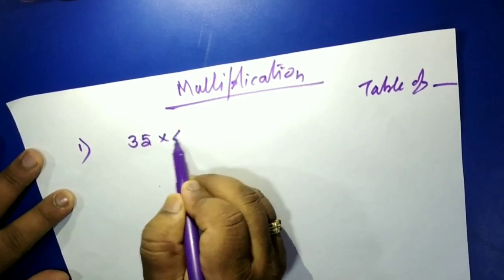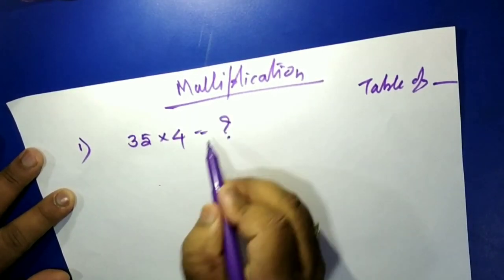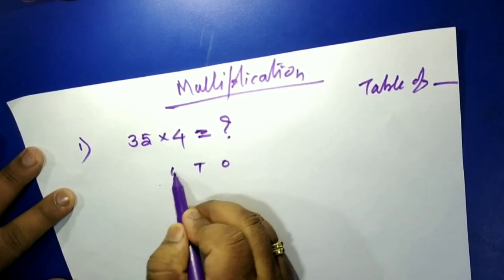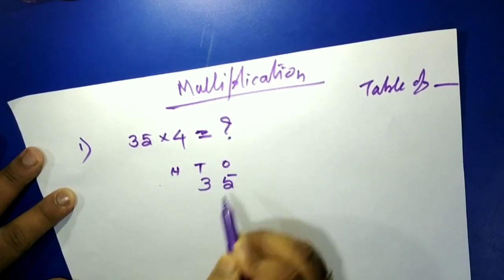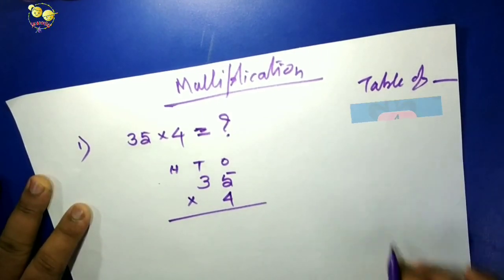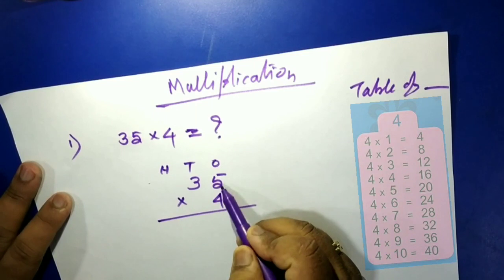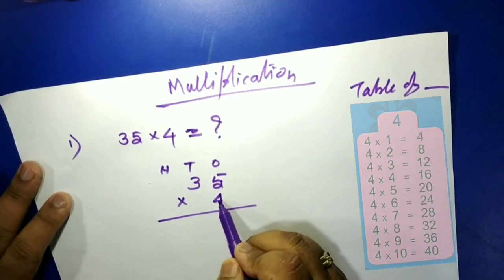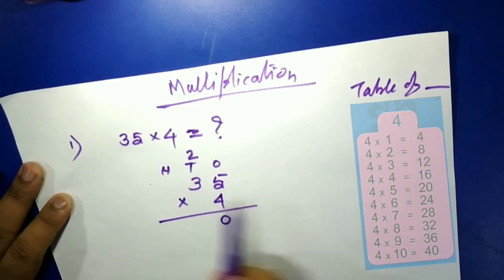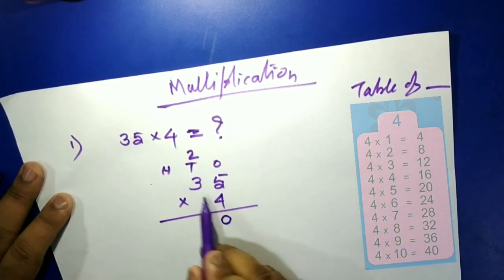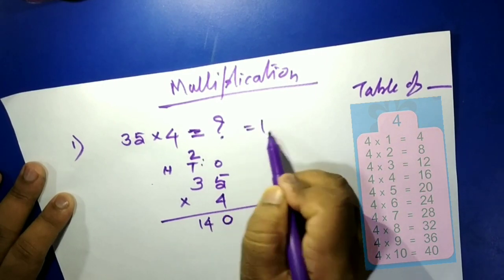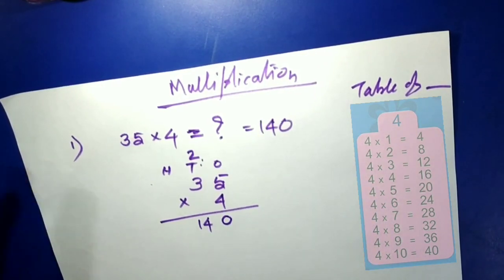Let's multiply 35 into 4. Write ones and tens. 4 fives are 20 — write zero and carry 2. 4 threes are 12, plus 2 is 14. So the answer is 140.